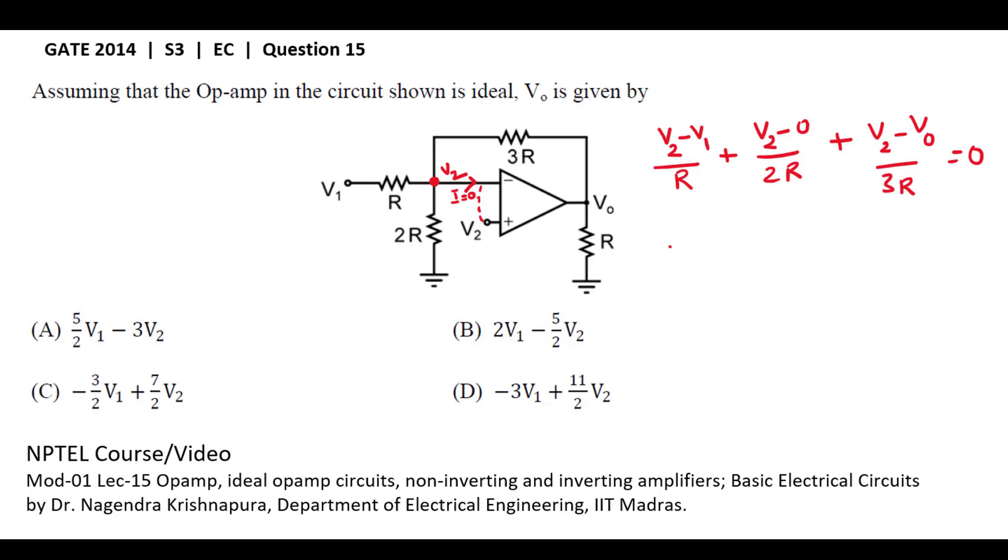Simplify this equation: 6V2 minus V1 plus 3V2 minus 2V2 minus V0 equals to 0.